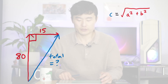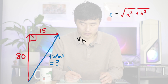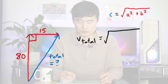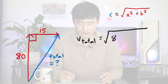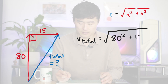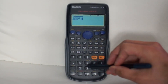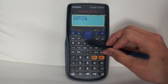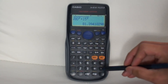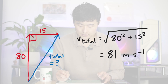Now we can go back to the problem and use this equation to figure out our total velocity. The total velocity, or v total, is equal to the square root of 80 squared plus 15 squared. If we enter that into our calculator, we'll get an answer of 81 meters per second.